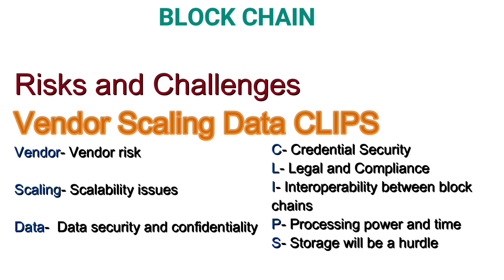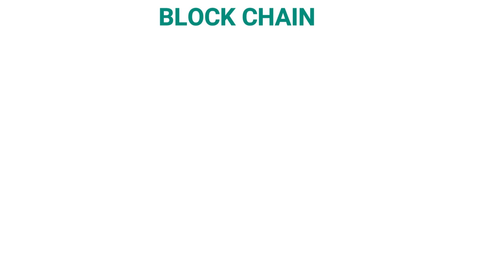Next topic is Risks and Challenges of Blockchain. The mnemonic for the same is 'VENDOR SCALING DATA CLIPS'. Vendor stands for Vendor Risk, Scaling for Scalability Issues, Data for Data Security and Confidence, C for Credential Security, L for Legal and Compliance, I for Interoperability between blocks and chains, P for Processing Powers and Time, and S for Storage as a hurdle.